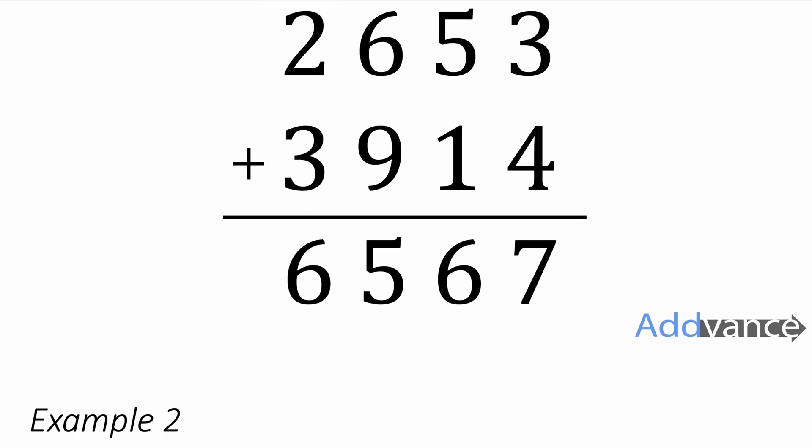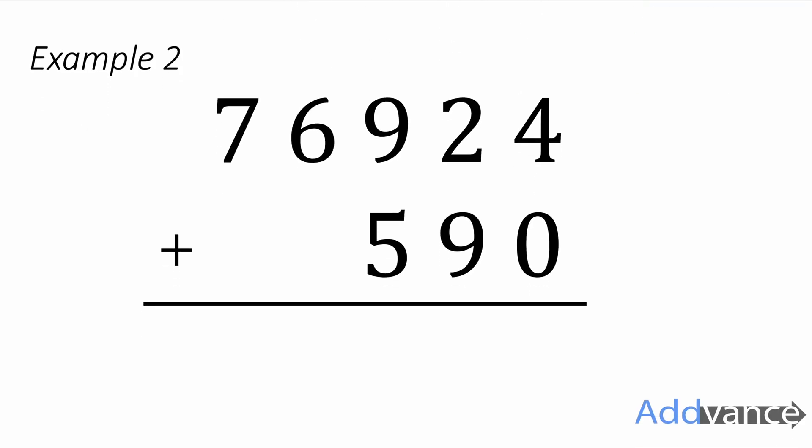Let's look at example two now. This says 76,924 plus 590. We're going to add four plus zero to get four. Two plus nine is eleven.